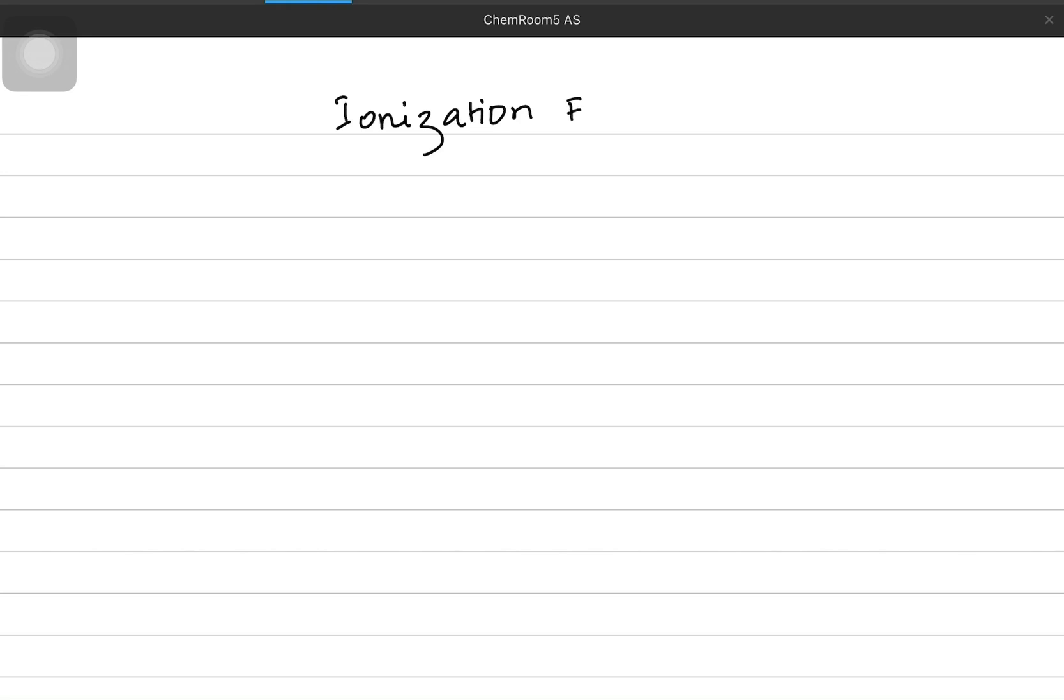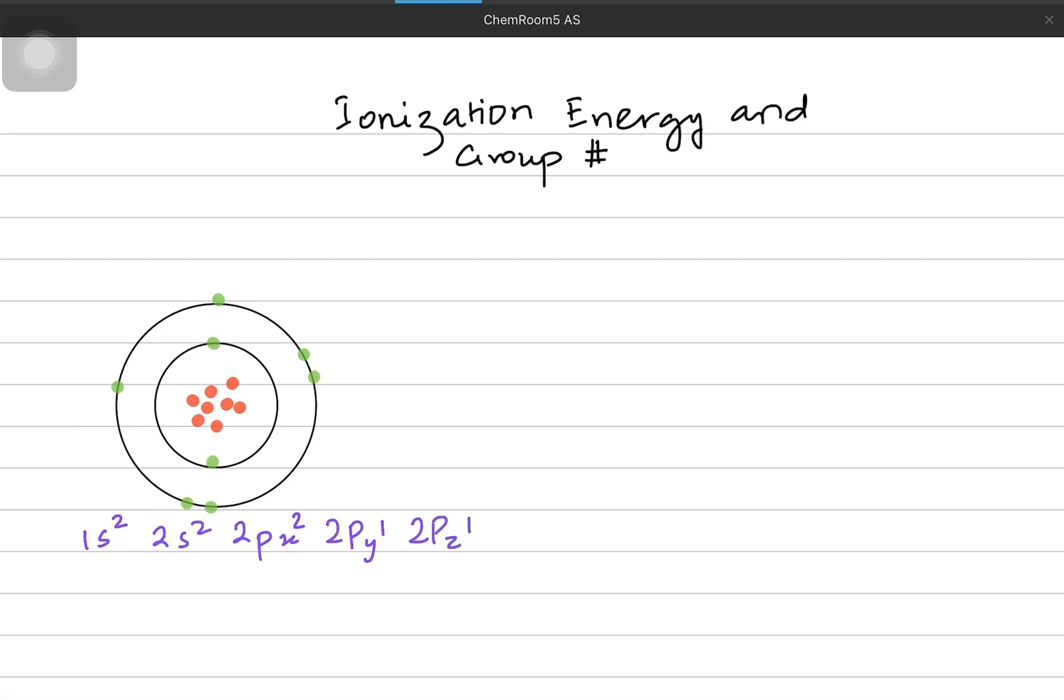Now what we're going to do is we're going to be talking about the ionization energy and the group number, because even the group number has an impact. Imagine oxygen atom with eight protons and overall eight electrons, six of which are in the outer shell. The configuration for the oxygen atom is 1s2, 2s2, 2px2, 2py1, 2pz1.